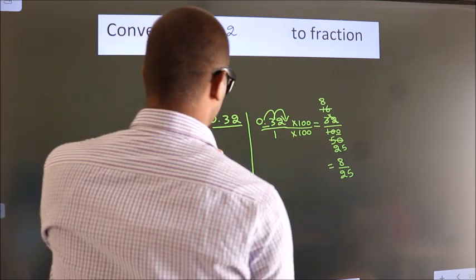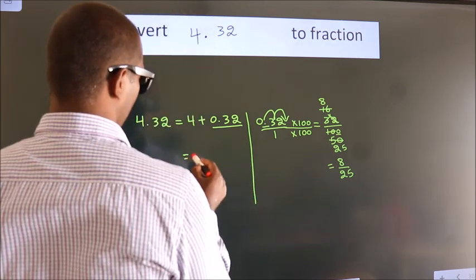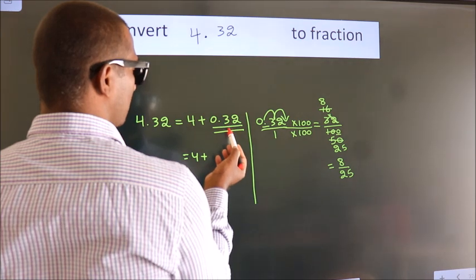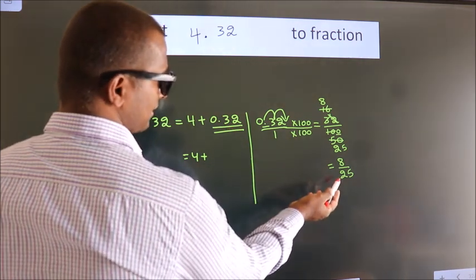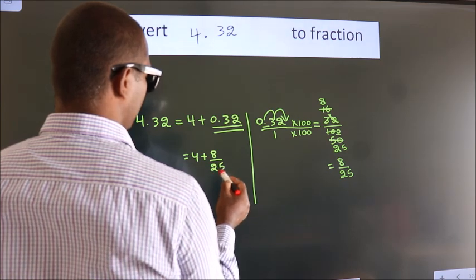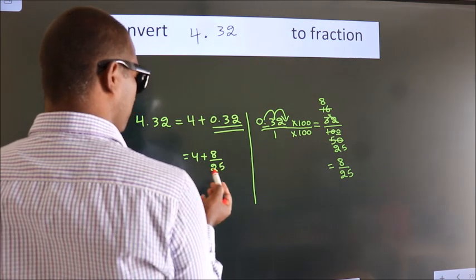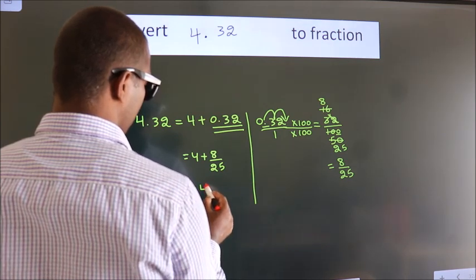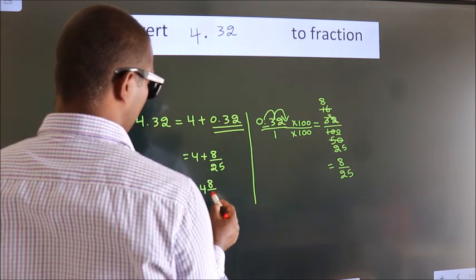Now here, 4 plus in place of 0.32, we write this fraction 8 by 25. 4 plus 8 by 25. In mixed fraction it is 4 and 8 over 25.